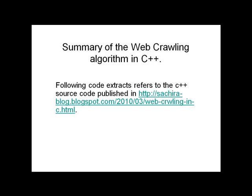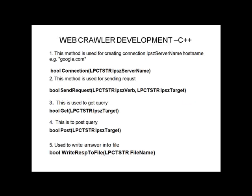The following is a summary of the web crawling algorithm in C++. The code extracts refer to the C++ source code at the provided link. The Connection method is used to create a connection; Send Request is used to send a request; Get is used for a GET query; Post is used for a POST query; and Write Response to File is used to write the answer to a file.